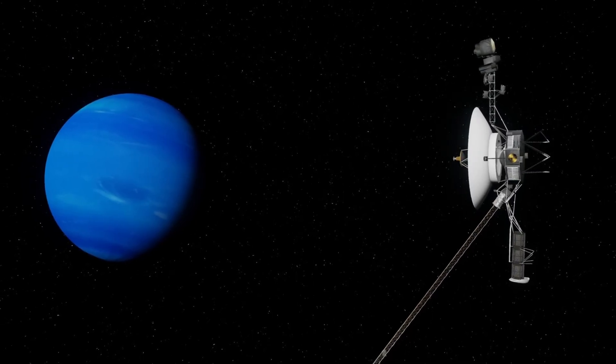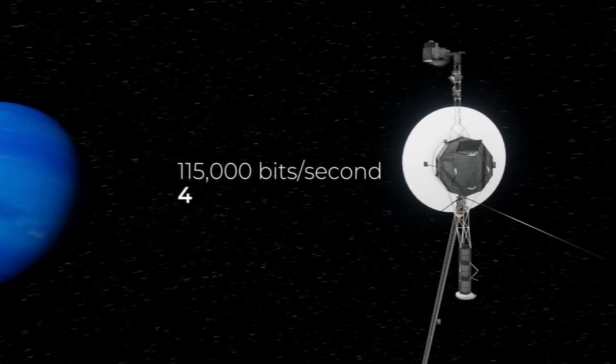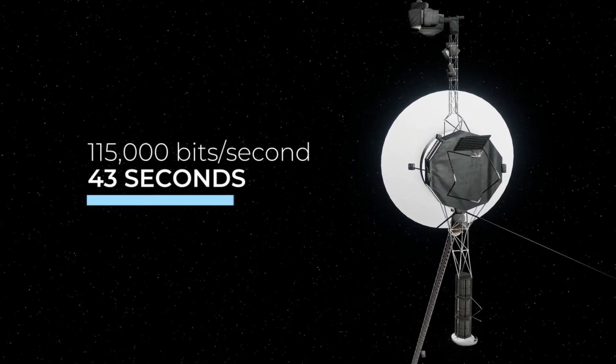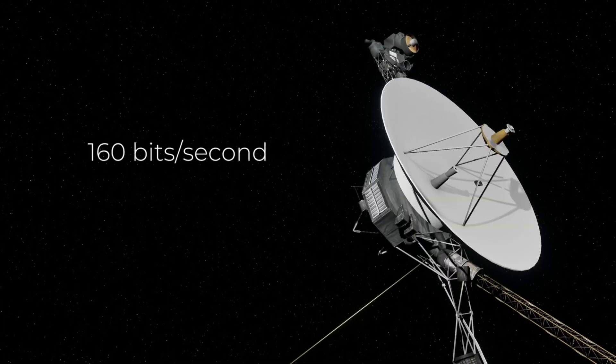Back in the day when Voyager 1 was much closer, it had a maximum data rate of around 115,000 bits per second. At this rate, it would take about 43 seconds to send an entire image back to Earth.